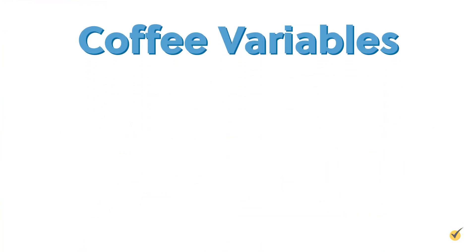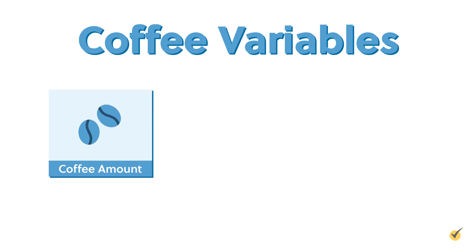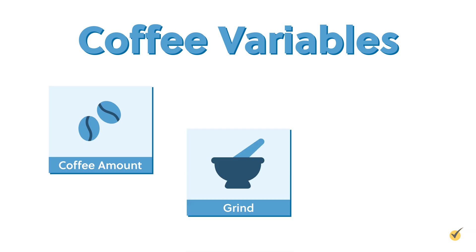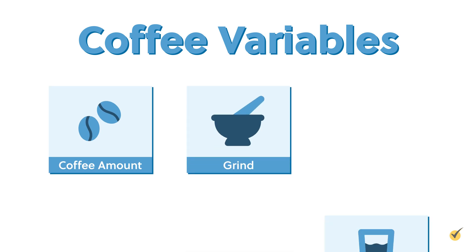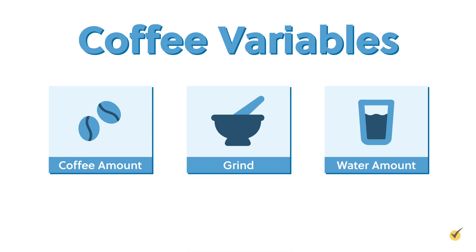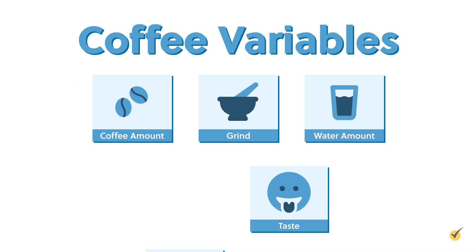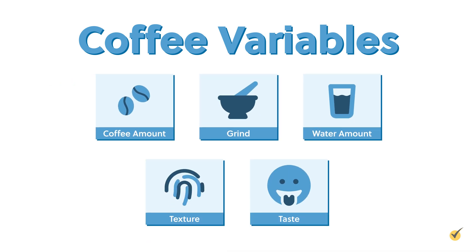In my daily coffee experiment, we have a few variables at play: the amount of coffee, the grind, and the amount of water. The taste and texture of the coffee were other variables. Sometimes it was bitter and watery. Sometimes it was smooth and rich.